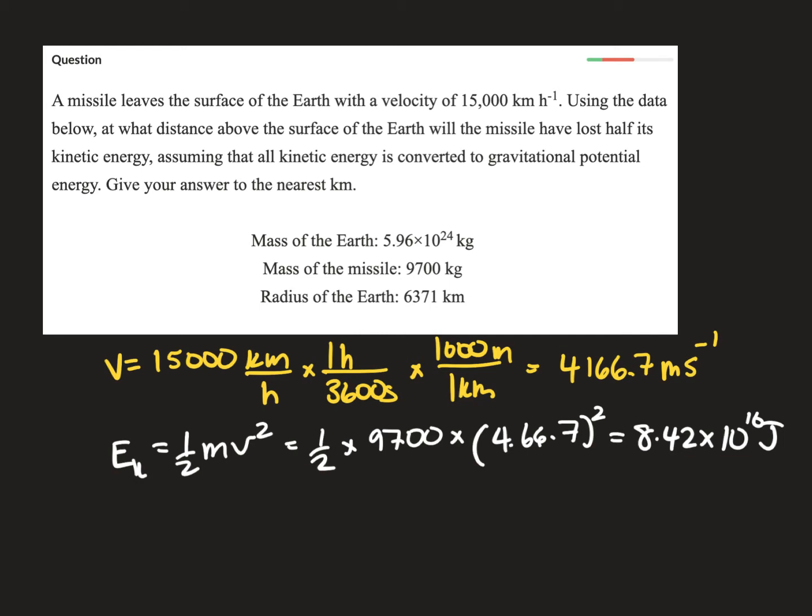So that means it has left the surface of the Earth and now has that amount or half of that kinetic energy. Let's think about how much potential energy it must have. So let me just write down here, E current is going to be equal to the kinetic energy. Plus, remember, it did have some on the surface.